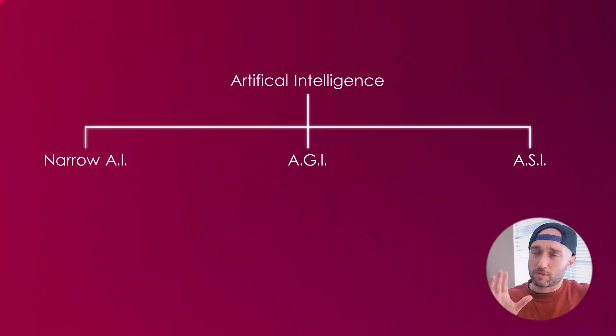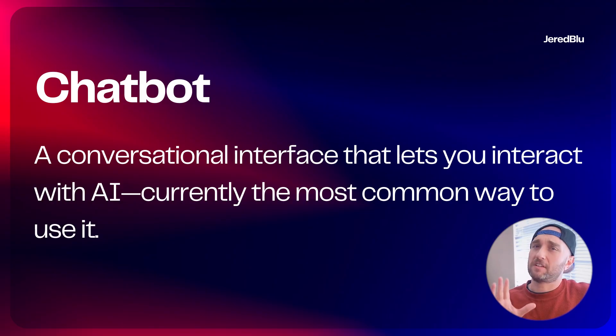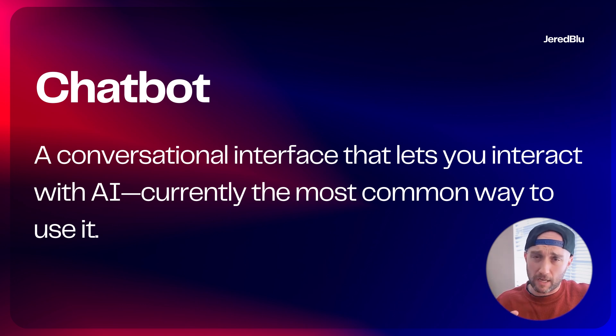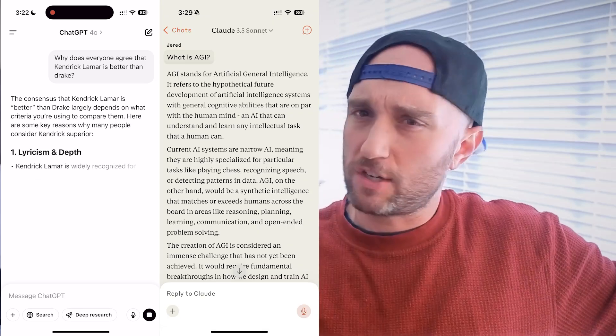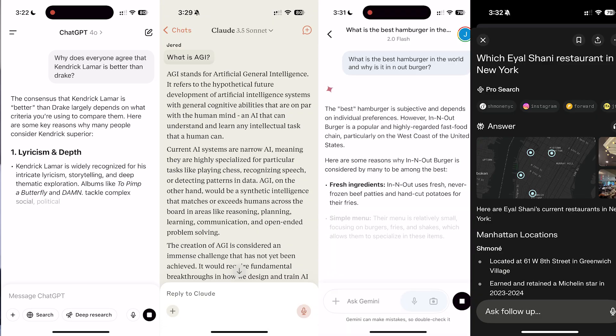ChatGPT is what made AI popular, but it's only a single product from one company: OpenAI. ChatGPT, like it sounds, is a chatbot, which essentially is just a way for us to interact with AI. We use them all the time — it's the main way that we interact with AI right now. The most popular ones today are of course ChatGPT, Claude, Gemini, Perplexity — the list goes on, and we'll talk about more of those later.